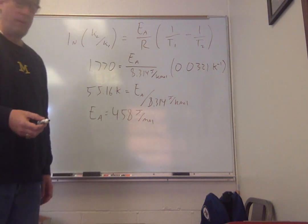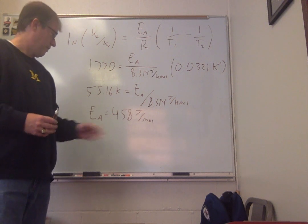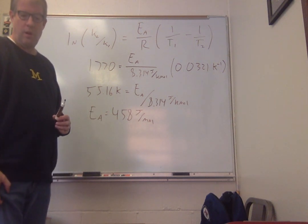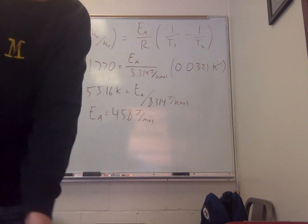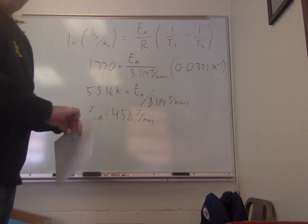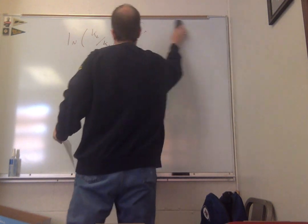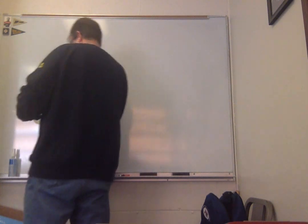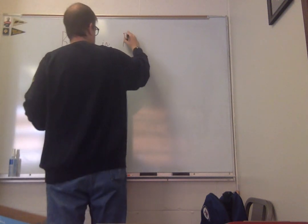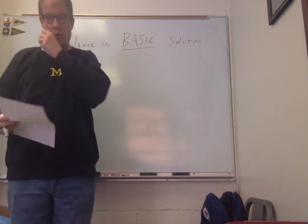That is how you approach a problem like that question on the exam. The relevant equations are provided, as is 8.314 joules per Kelvin per mole. This reaction is relatively facile to get going because that's a pretty low activation energy. The next question that came up was balancing a redox equation. Let's do a reaction in basic solution.